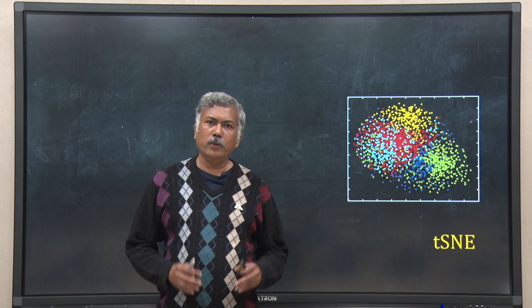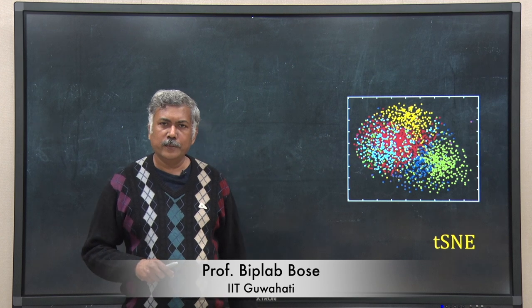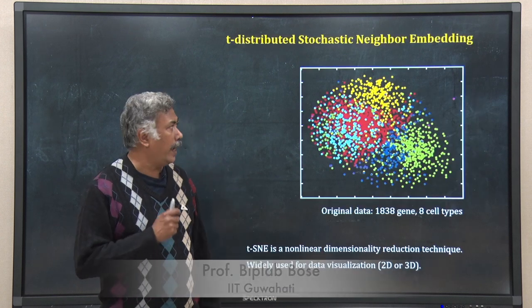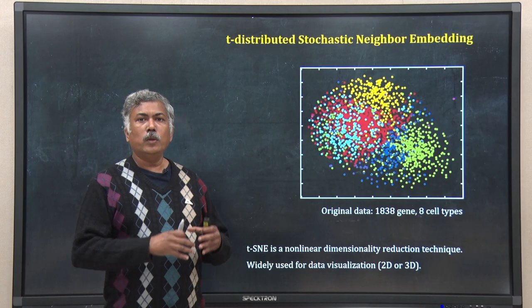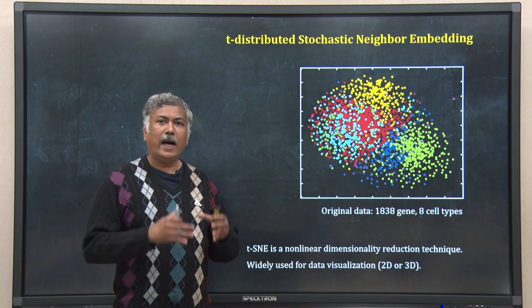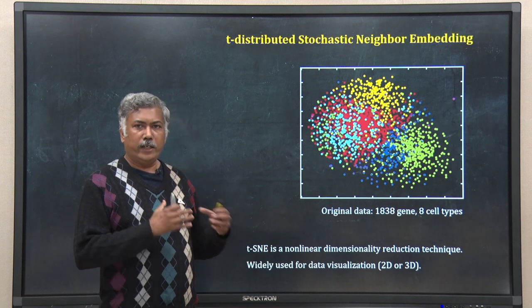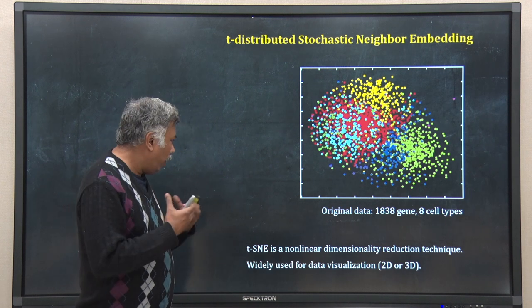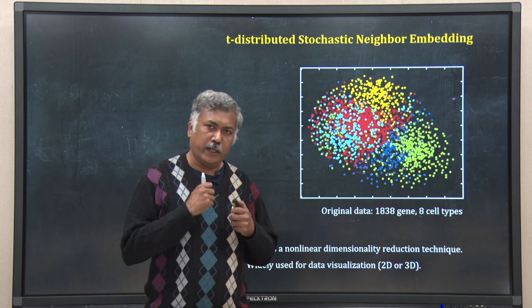In this lecture, we will discuss T-SNE. T-SNE stands for T-distributed Stochastic Neighbor Embedding. It is a quite popular method to visualize higher dimensional data in lower dimension, and it is a non-linear technique of dimension reduction.